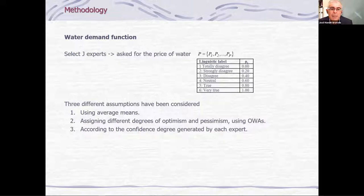Now we have several experts with several opinions. Now we have to aggregate this information. We propose here three methodologies to disaggregation. One is the traditional, using average means. The second one is assigning different degrees of optimism or pessimism, that is, using OWAS. And finally, the third one is according to the confidence degrees generated by each expert.